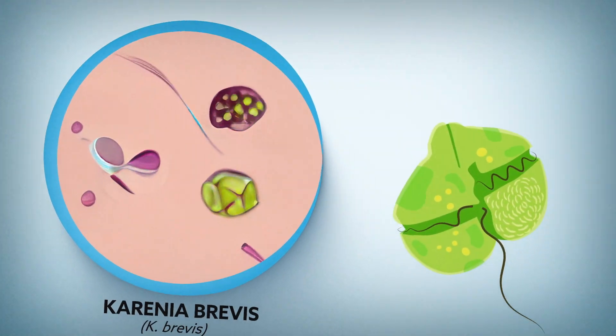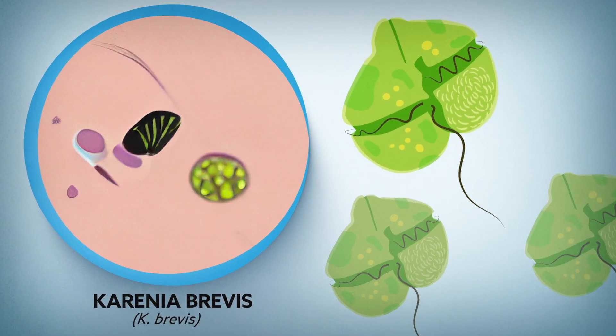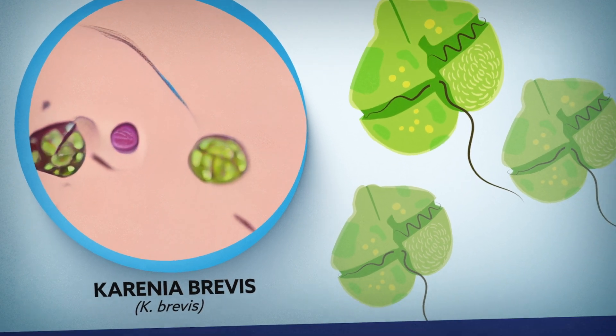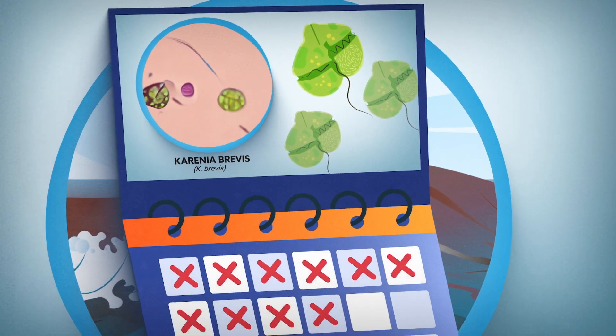In Florida, red tide refers to blooms of a species commonly observed in the Gulf of Mexico called Karenia brevis. A bloom can last for days, weeks or even years.